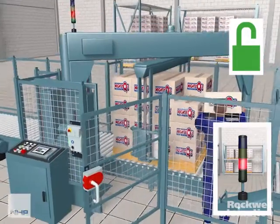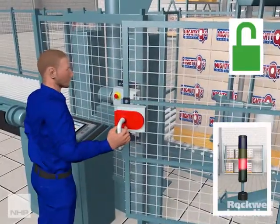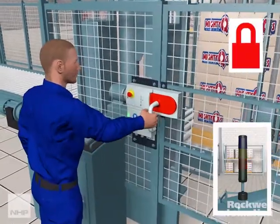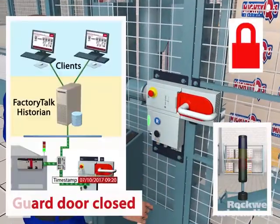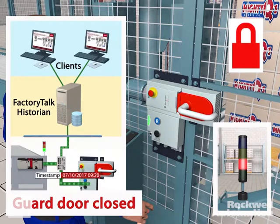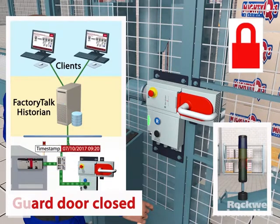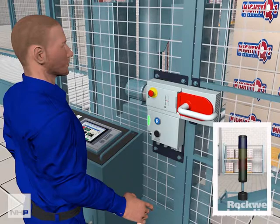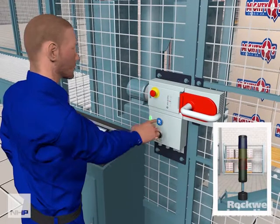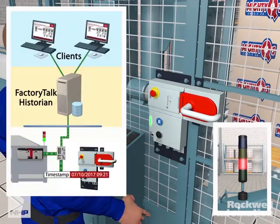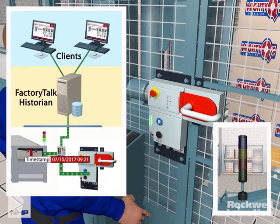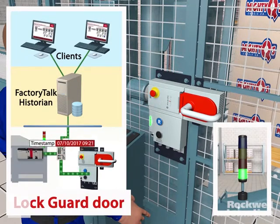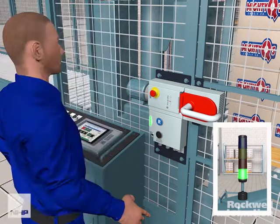Once corrected, the operator exits the application, closing the guard door. The guard door remains closed but unlocked until a reset request from the operator. This reset request locks the guard door closed and enables safe start-up of the machine.